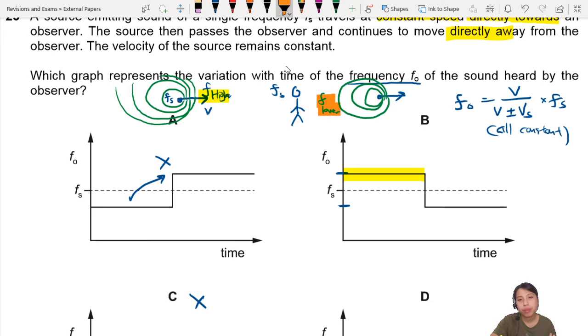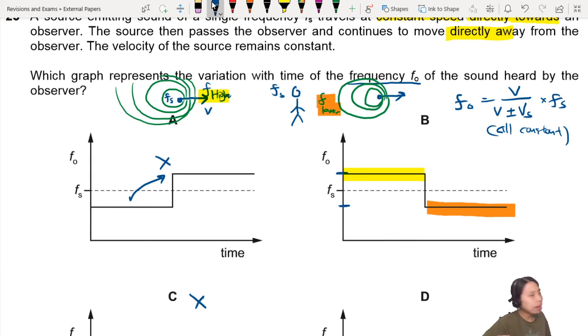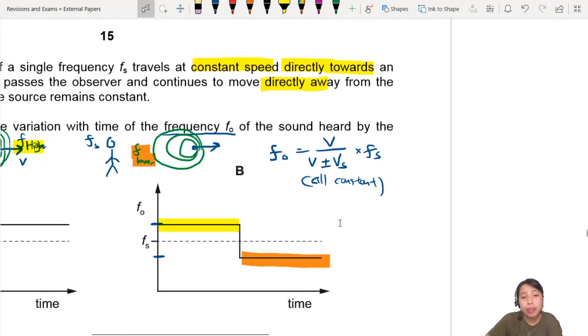Then a lot of people will get very confused. They say, Miss, but in real life, I heard that day there was an ambulance, and it was like meeeeeeeww. Isn't that a curving down kind of thing like this? Yes, that is what you hear in real life.